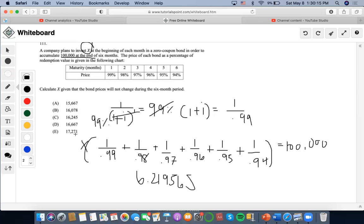Now let's find X. Now I'm going to do 100,000 divided by 6.219565. I'm at 16,078.229, which is going to be close with the answer B.